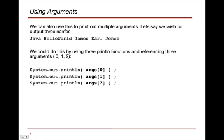So basically, we could also use this to print out multiple arguments. Let's say we wish to output three names, James, Earl, and Jones. We could do this by using three println functions and referencing the three arguments of the zero, the one, and the two, such as below.